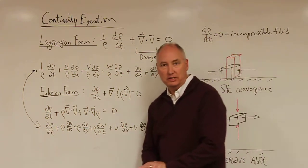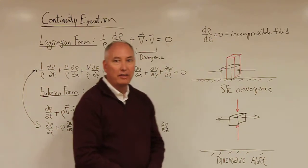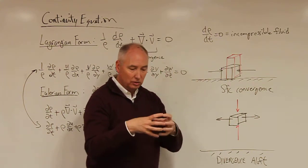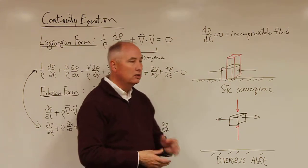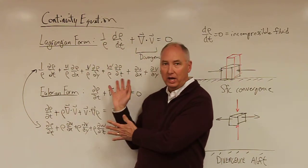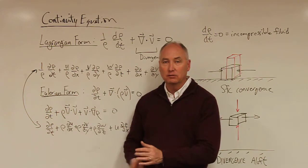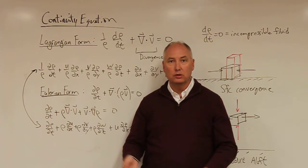So the beauty of this is that we understand qualitatively how the atmosphere is going to react. If we compress it or expand it, we have divergence or convergence in any given area. But now we have the mathematical way to actually quantify the divergence and the convergence and its impact on the local motions or the local density.